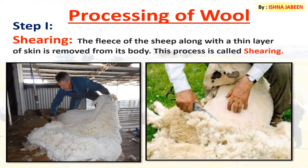The first step in processing of wool is shearing. The fleece of the sheep along with a thin layer of skin is removed from its body — this process is called shearing. Usually the hair is removed during hot weather, which enables the sheep to survive without their protective coat of hair.